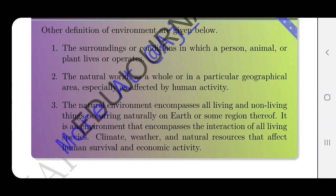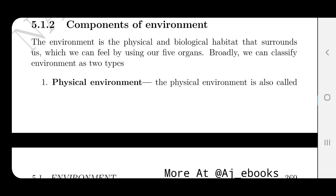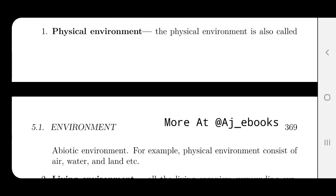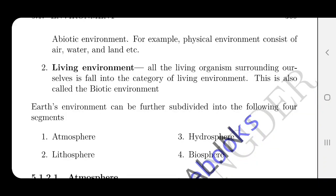The components of environment: the environment is the physical and biological habitat that surrounds us, which we can feel by using our five sense organs. Broadly, we can classify the environment into two types: physical environment — also called abiotic environment — and living environment, also called biotic environment. All the living organisms surrounding us fall into the category of living or biotic environment.